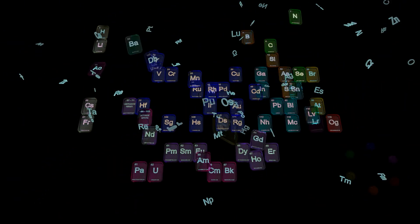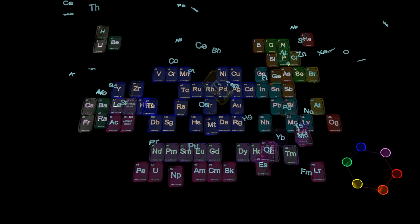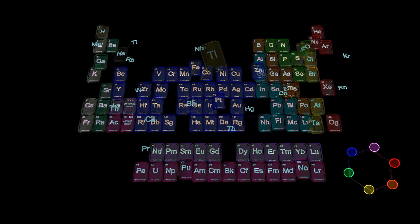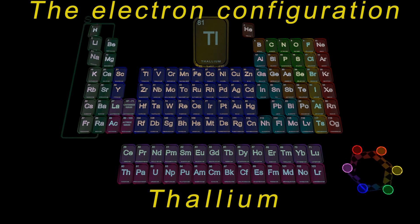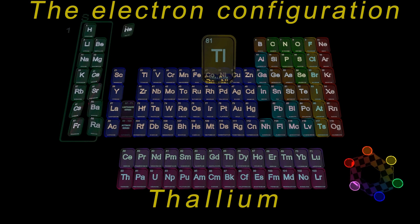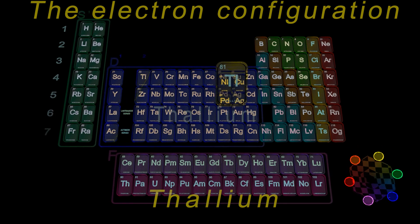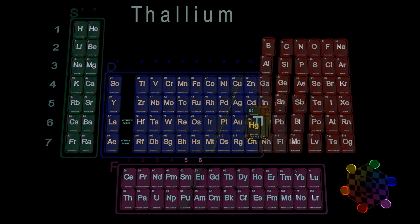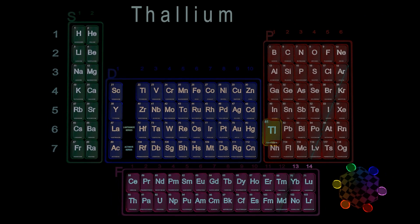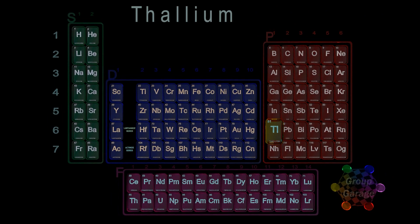Welcome to the Group Garage and our quick tutorial on how you can determine and write thallium's electron configuration, generally using thallium's location in the periodic table. After we have split the table into the four different subshell regions, we find thallium in the boron group, group 13, the first column in the table's p-block.